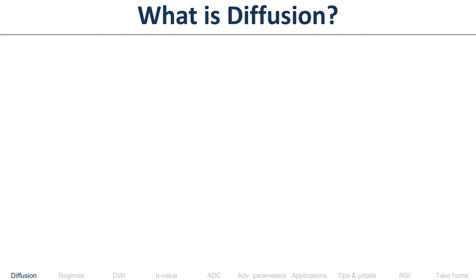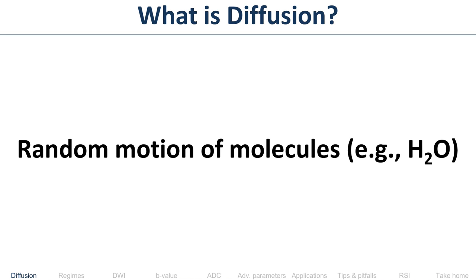Let's start with what is diffusion — this goes back to high school physics. Diffusion is simply the random motion of molecules. In the human body, we are really looking at water molecules, because fat molecules don't really diffuse very much.